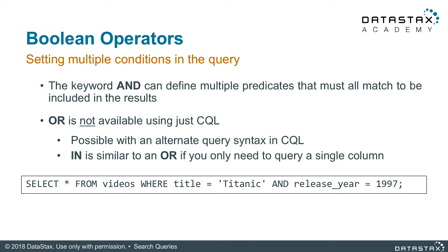Multiple conditions can be added to your queries. The keyword AND can define multiple predicates that must all match to be included in your result. Remember that while AND is available for CQL queries, OR is not available when using CQL with search, and neither is NOT. To use OR, you can utilize an alternative query syntax in CQL, or utilize IN as it is similar to an OR if you only need to query a single column. With OR, you can just run two separate queries, and with DSC's outstanding performance, you will have the results quickly.